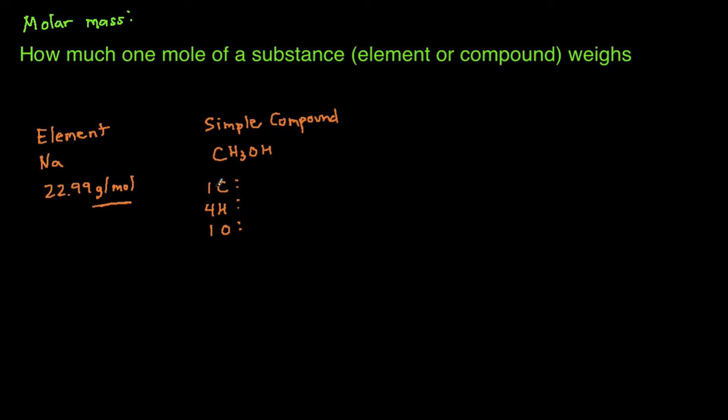Then we're going to take the number and multiply it by the molar mass of the element. Take one, multiply it by the molar mass of carbon, which is about 12.0107. Then for hydrogen, we're going to take four hydrogens, multiply it by the molar mass of each hydrogen, which is 1.00794. Then we're going to take the one oxygen, multiply it by its molar mass, which is 15.9994.